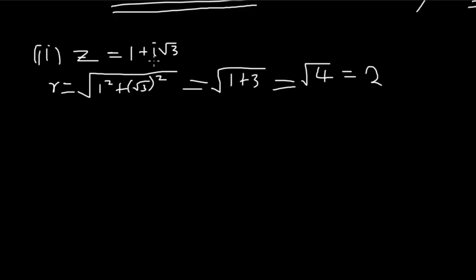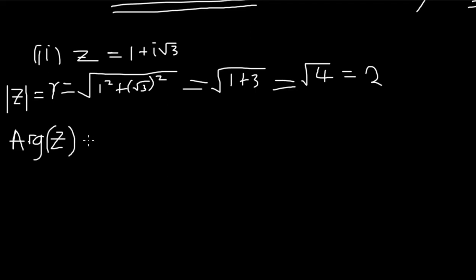We found the magnitude of z, which is 2. Now let us find the argument of z. The argument of z is tan⁻¹(y/x). My y is √3 and my x is 1, so the argument is tan⁻¹(√3/1) = tan⁻¹(√3).